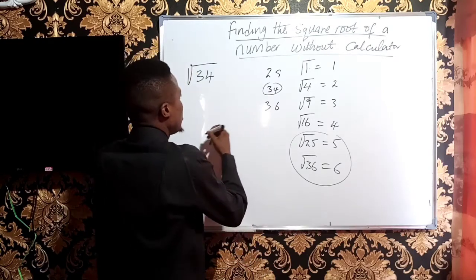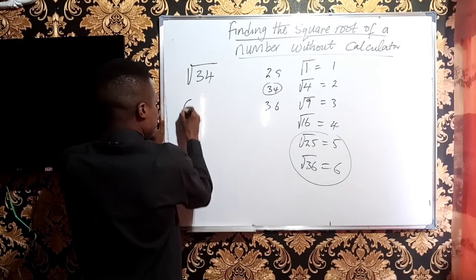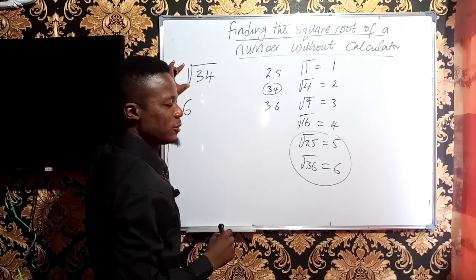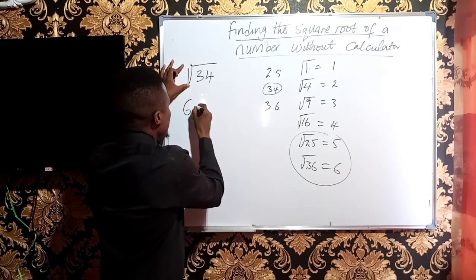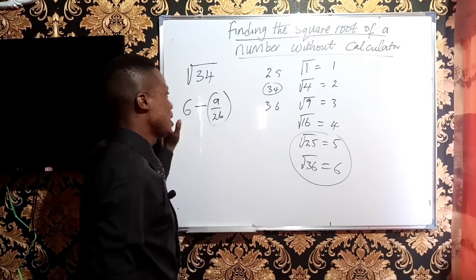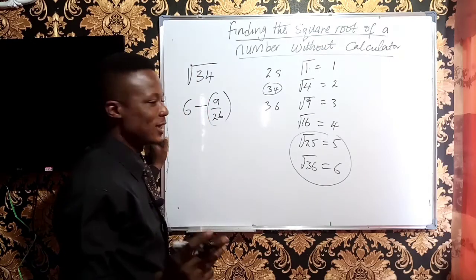So the square root of 34 is close to 6. The square root of 36 is 6, which is more than 34. So the trick is to use minus a over 2b. That is the formula I always use to get something like this.